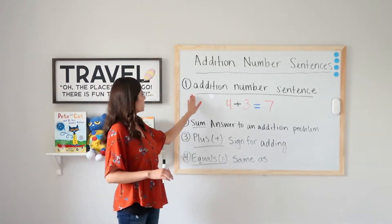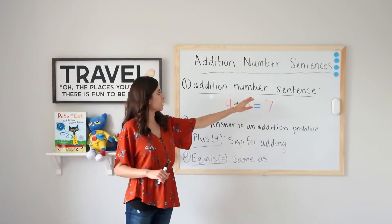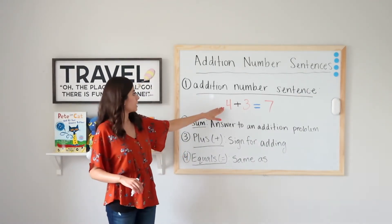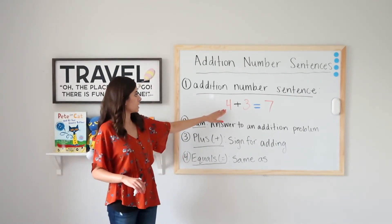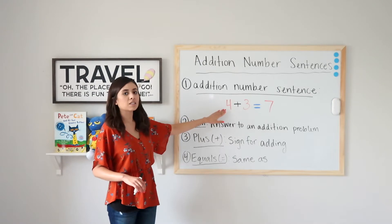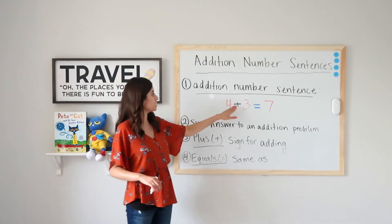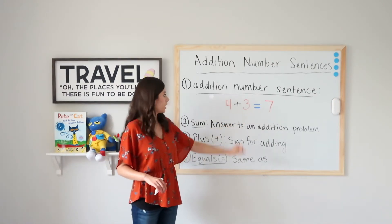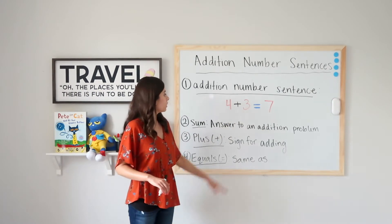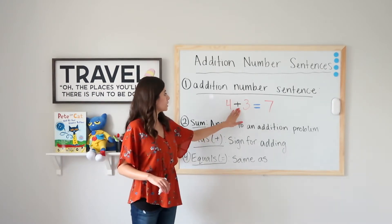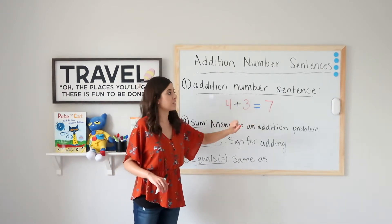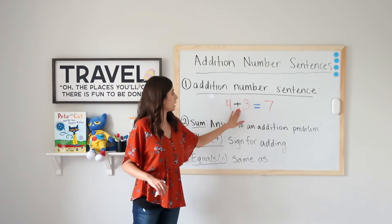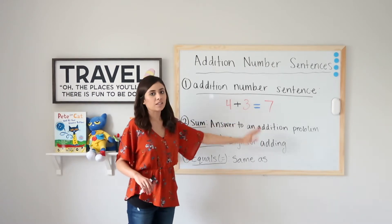Number one: addition number sentence. An addition number sentence is an expression that uses numbers, an addition sign, and an equals sign. Here I have four plus three equals seven — I have my numbers, my addition sign, and my equals sign.